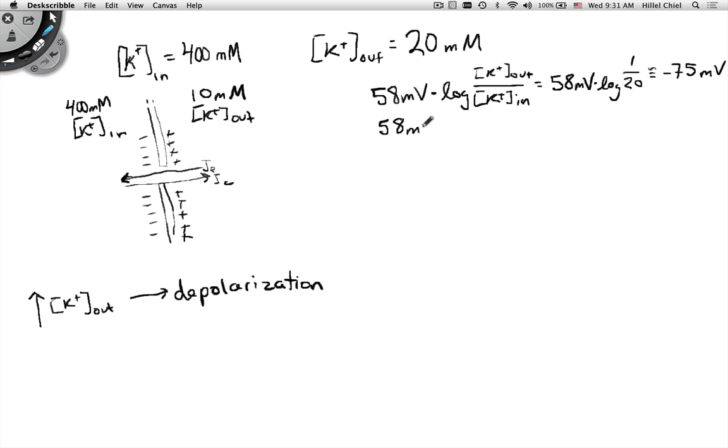We start with 58 millivolts times log of out over in, which is 10 over 400. Let's calculate this. It should be about negative 93. So minus 93. You decrease the potassium outside and what do you get? That's a hyperpolarization. There's more polarization across the membrane. But you never left equilibrium.